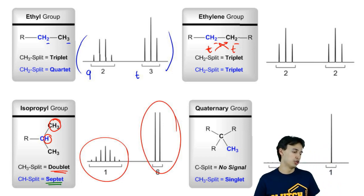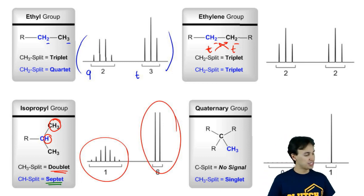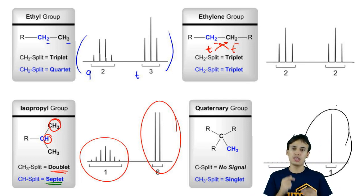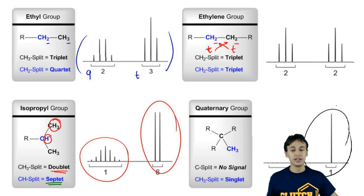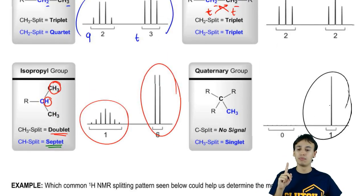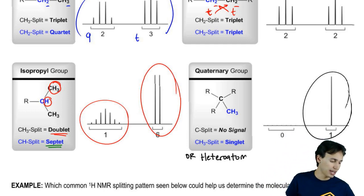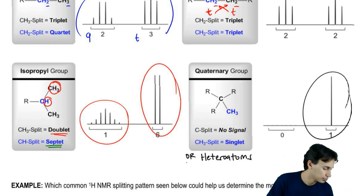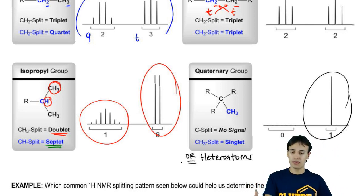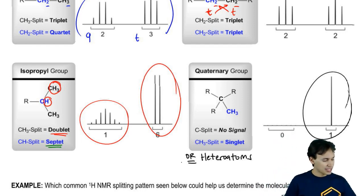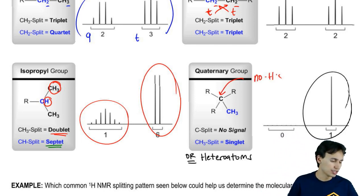Lastly, we have quaternary groups. This would be an example of when you just have singlets for no apparent reason. A bunch of singlets tells you that you must have hydrogens that aren't being split by anything. Remember that heteroatoms can also create singlets. But in the absence of heteroatoms — if you don't have oxygen or nitrogen — and you still have a bunch of singlets popping up everywhere, that tells you that you might have carbons that have no H's attached.